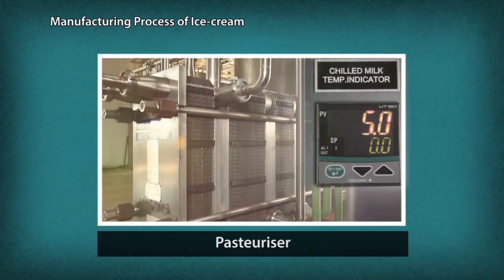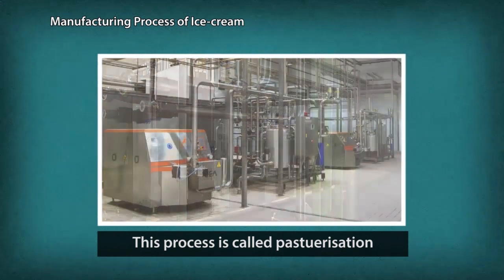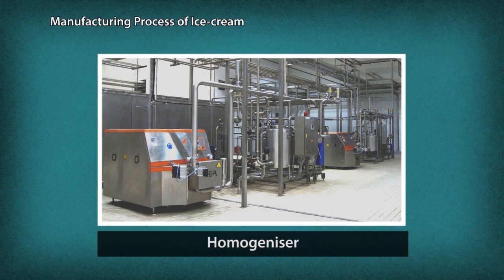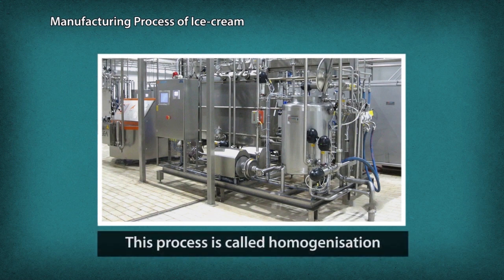In the pasteurizer, the pre-mix is heated to 82 degrees centigrade for 18 seconds and then quickly cooled to 5 degrees centigrade. This process is called pasteurization. The pre-mix then passes through a homogenizer where the fats are further broken down into small globules, which smoothens the mixture. This process is called homogenization.